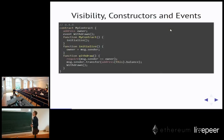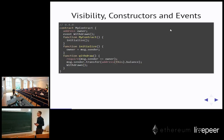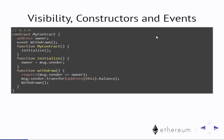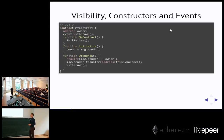Let's go through some of the changes. We start with visibility, constructors, and events. These are things you might have noticed already in recent non-breaking versions, because most of the changes we gradually introduced by adding warnings if you still use the old non-recommended way. So this is a simple smart contract in the 0.4.0 syntax, and if you know the language a little, you notice at least one bug.